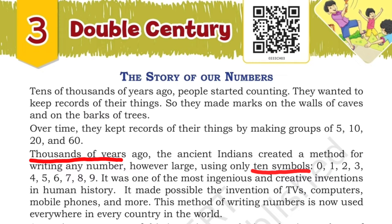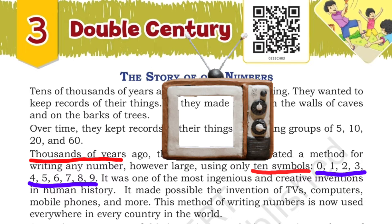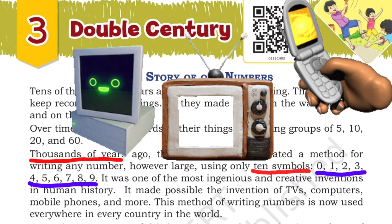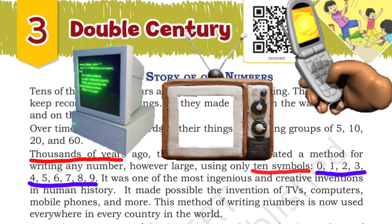Thousands of years ago, ancient Indians created a method of writing numbers — how large — using only 10 symbols: 1, 2, 3, 4, 5, 6, 7, 8, and 9. Ancient Indians created these symbols for writing numbers. It was one of the most ingenious and creative inventions in human history. Numbers are involved in our day-to-day life, and this important invention made possible the creation of TVs, computers, mobile phones, and much more. Using numbers, we have invented many things in this world.